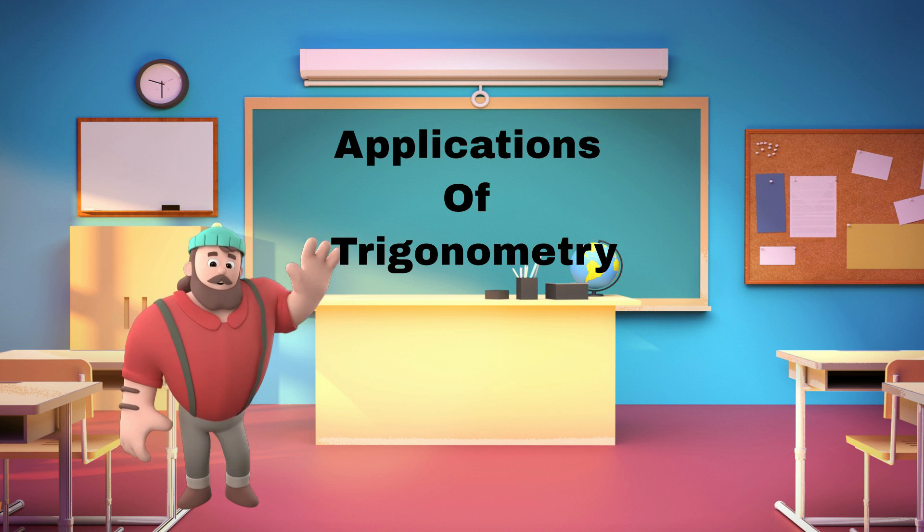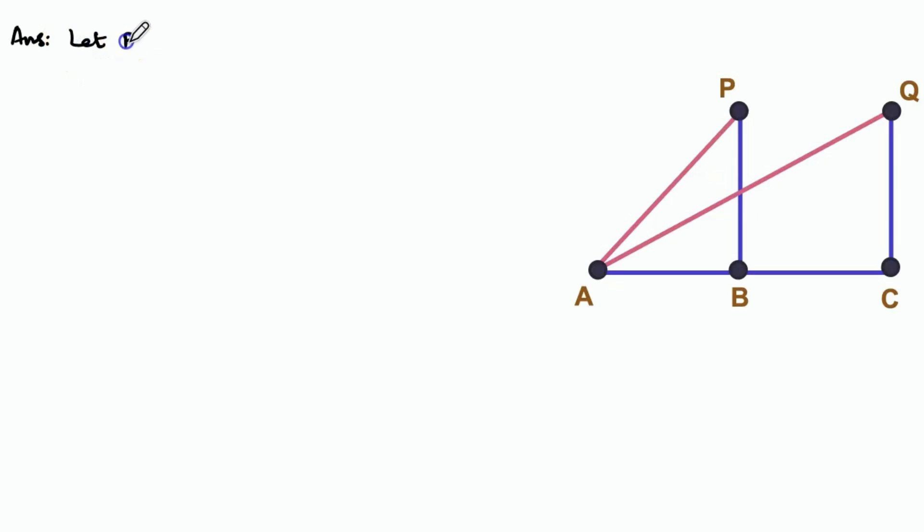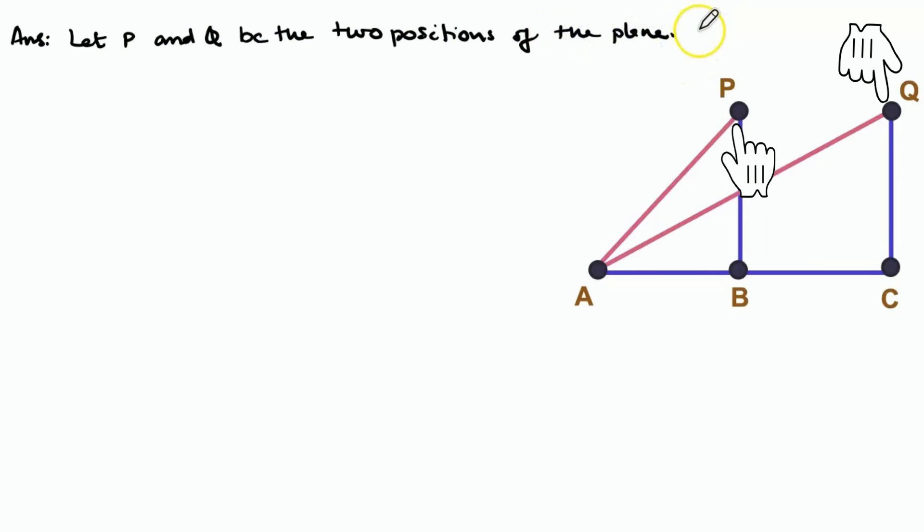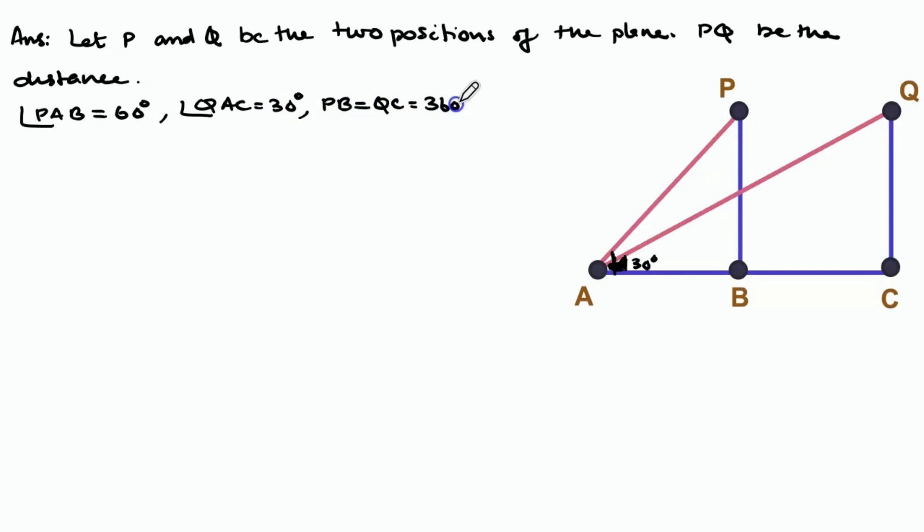Let us see the solution. Let P and Q be two positions of the plane. PQ be the distance. Angle PAB equals 60 degrees. Angle QAC equals 30 degrees. PB equals QC equals 3600 root 3 meters.